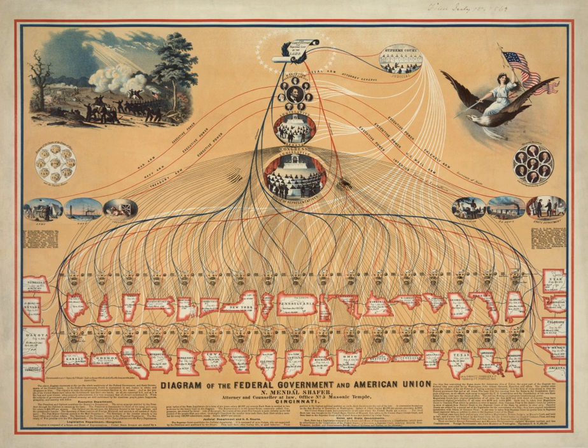Congress has the power to remove the president, federal judges, and other federal officers from office. The House of Representatives and Senate have separate roles in this process: the House must first vote to impeach the official, then a trial is held in the Senate to decide whether the official should be removed from office. Although two presidents have been impeached by the House of Representatives — Andrew Johnson and Bill Clinton — neither of them was removed following trial in the Senate.